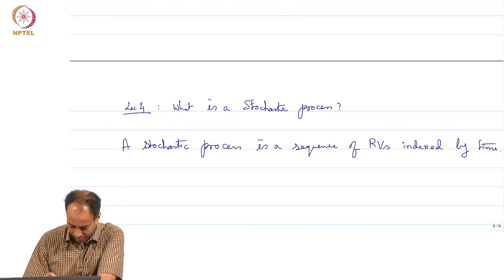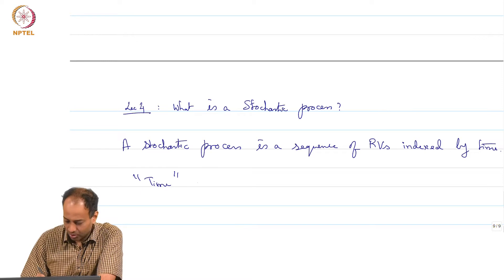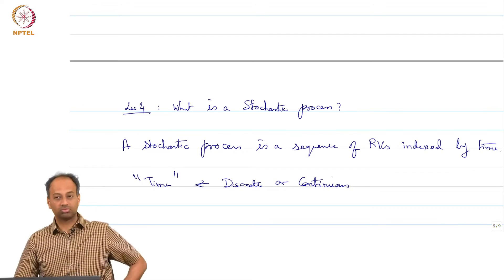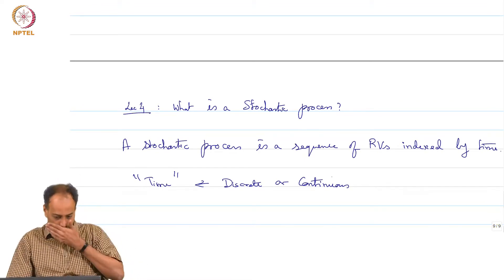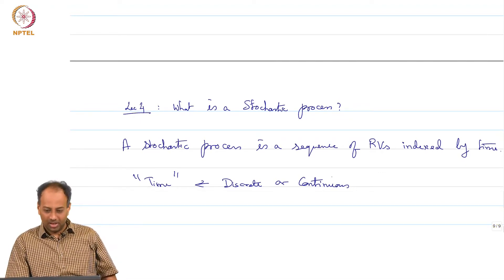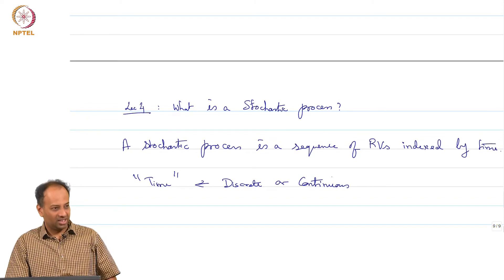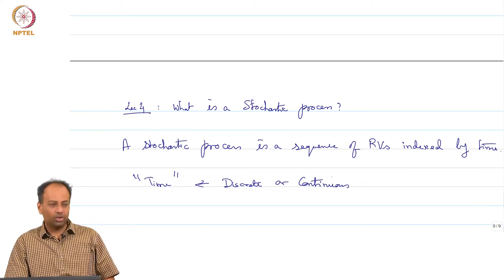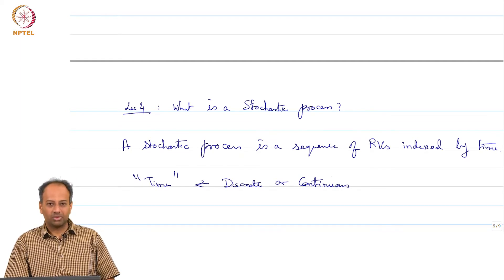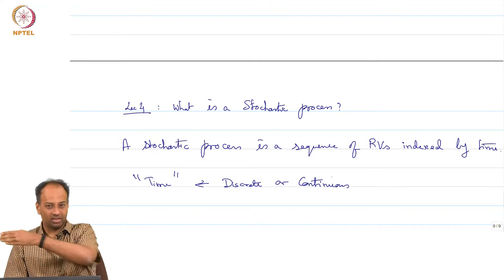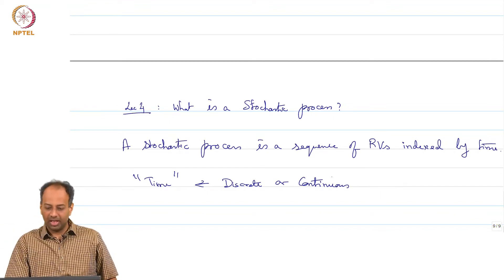This time that I am talking of could be discrete or continuous. The stochastic process may be observed only every minute or every hour — in that case the time index is a discrete index, indexed for example by integers. Or it could be continuous, indexed by ℝ or ℝ⁺, if you are continuously observing something as opposed to sampling it at integer times. So, this time index could be discrete or continuous.